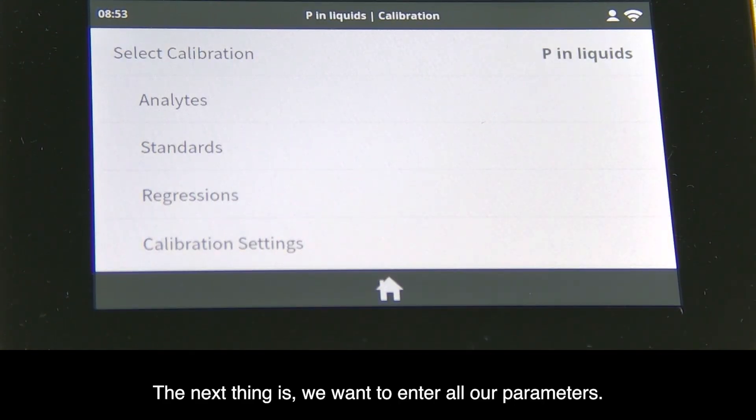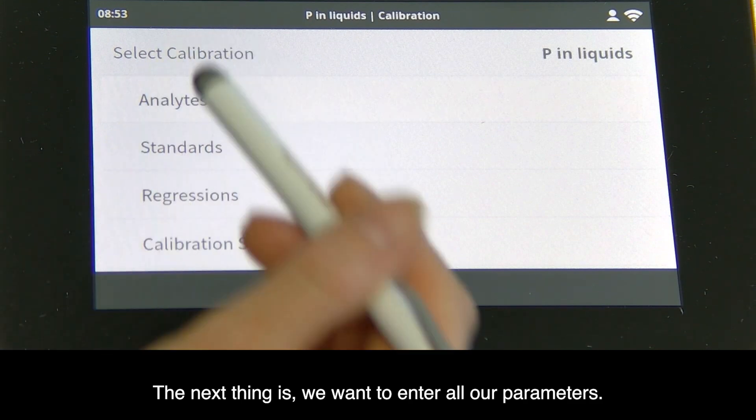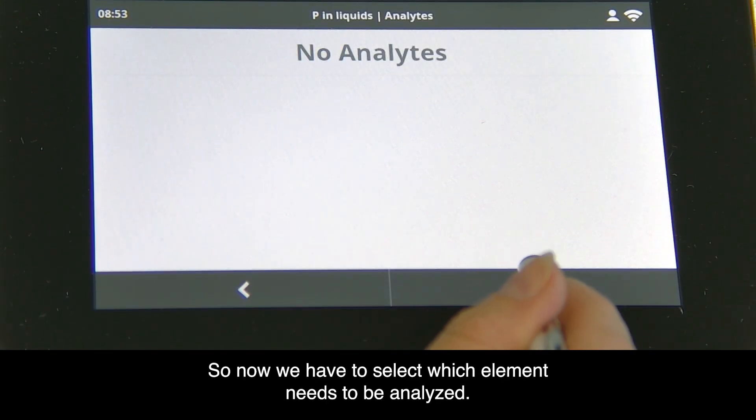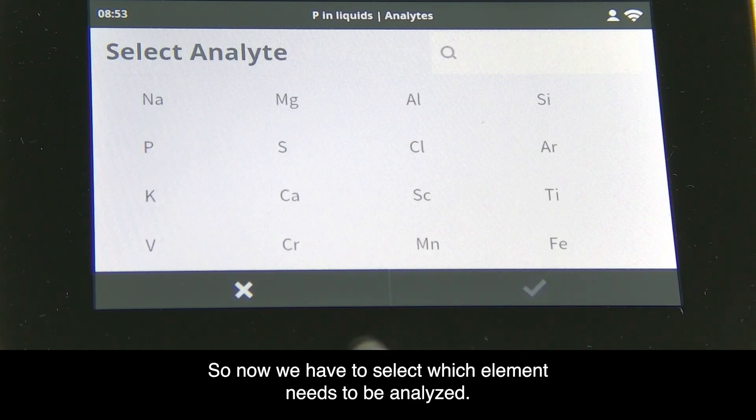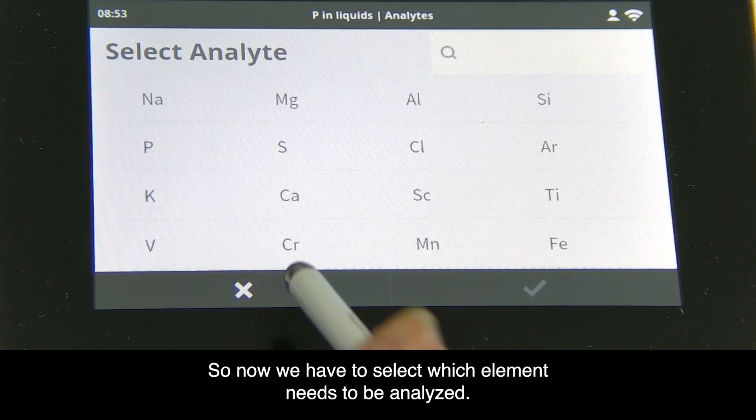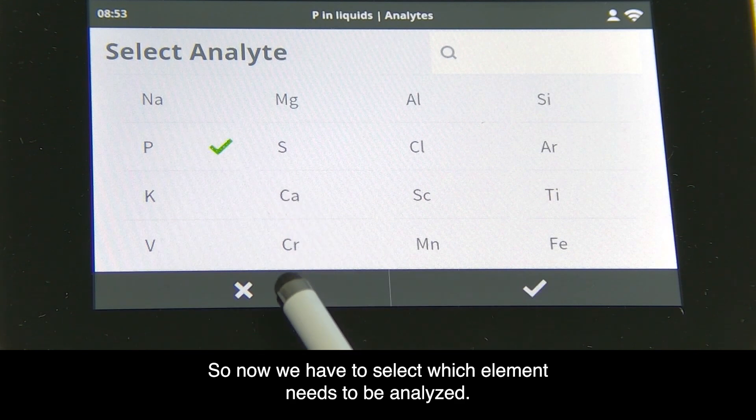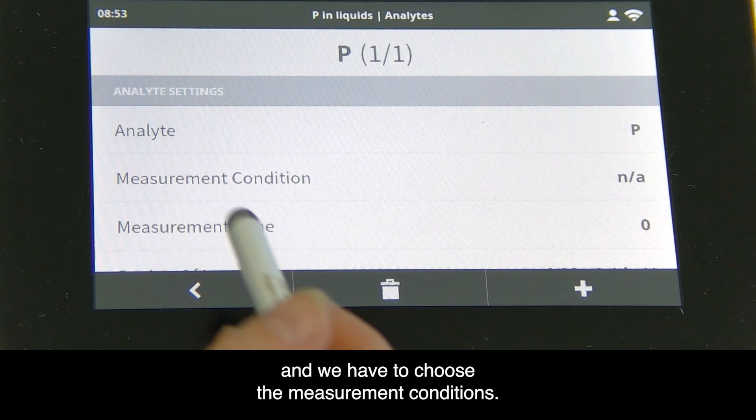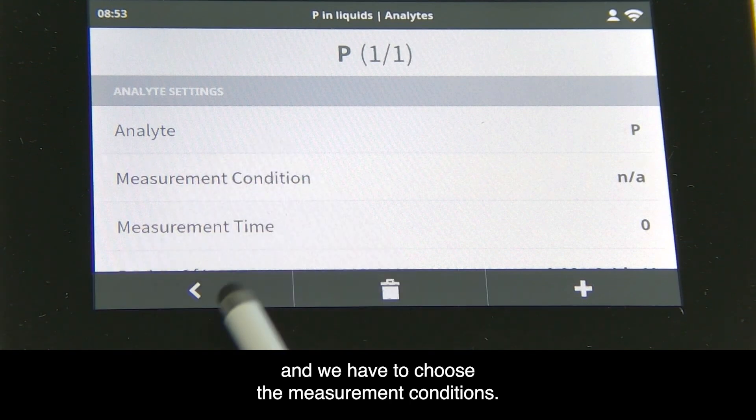The next thing is to enter all our parameters. We need to select which element to analyze - we want to analyze phosphorus. Then we choose the measurement conditions.